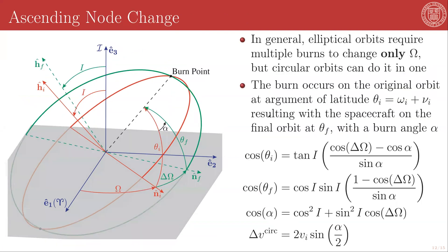Similarly, we can think about pure ascending node changes. And unlike the inclination case, for general elliptical orbits, you cannot do a pure ascending node change with a single burn. You can, however, achieve a pure ascending node change with a single burn for a circular orbit.